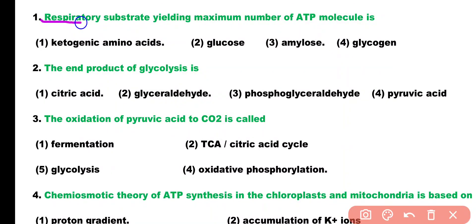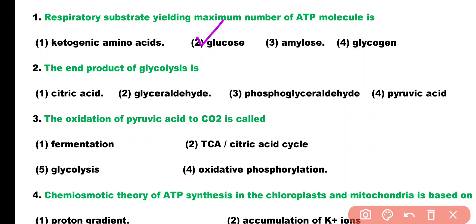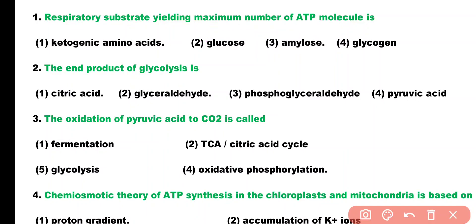Question number 1. Respiratory substrate yielding maximum number of ATP molecules is: ketogenic amino acid, glucose, amylose, or glycogen. Correct answer is option 2. Glucose is a respiratory substrate that yields the maximum number of ATP molecules.